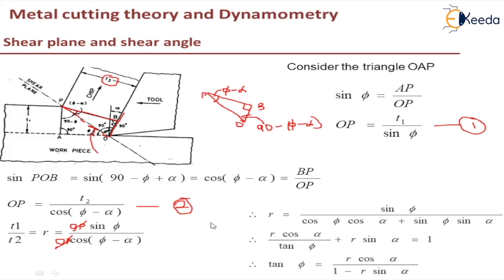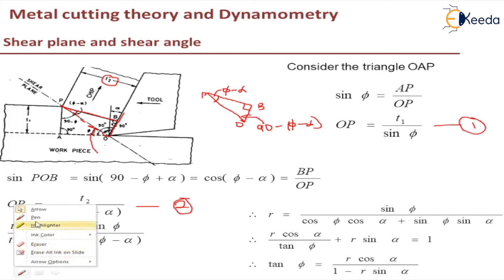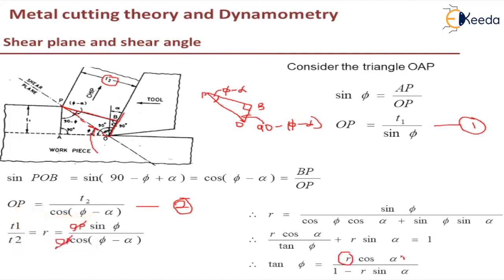That is the chip thickness ratio formula. Continuing, chip thickness ratio R equals sin phi divided by cos(phi minus alpha). Expanding using the compound angle formula — cos(A minus B) equals cos A cos B plus sin A sin B — we get R cos alpha divided by tan phi plus R sin alpha equals 1. Therefore, tan phi equals R cos alpha divided by (1 minus R sin alpha). So if we know the chip thickness ratio and the rake angle of the tool, we can find the shear angle using this relation.